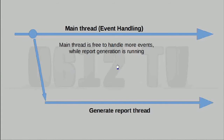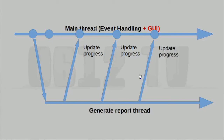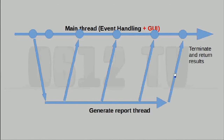If we expand the responsibilities of the main thread to let it do GUI as well, we can have something like a progress bar. The generate report thread constantly reports back and causes the progress bar to move forward. This creates a very responsive design, and at no point will the program just sit there and appear to do nothing. When the report is finished, it terminates and sends its results back to the main thread — that's how you show the results to the user.